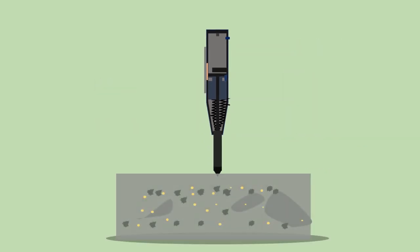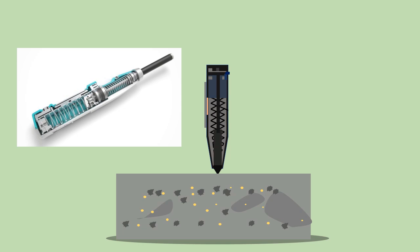When the plunger is pressed against the surface of the concrete, the mass rebounds from the plunger and retracts against the force of the spring.